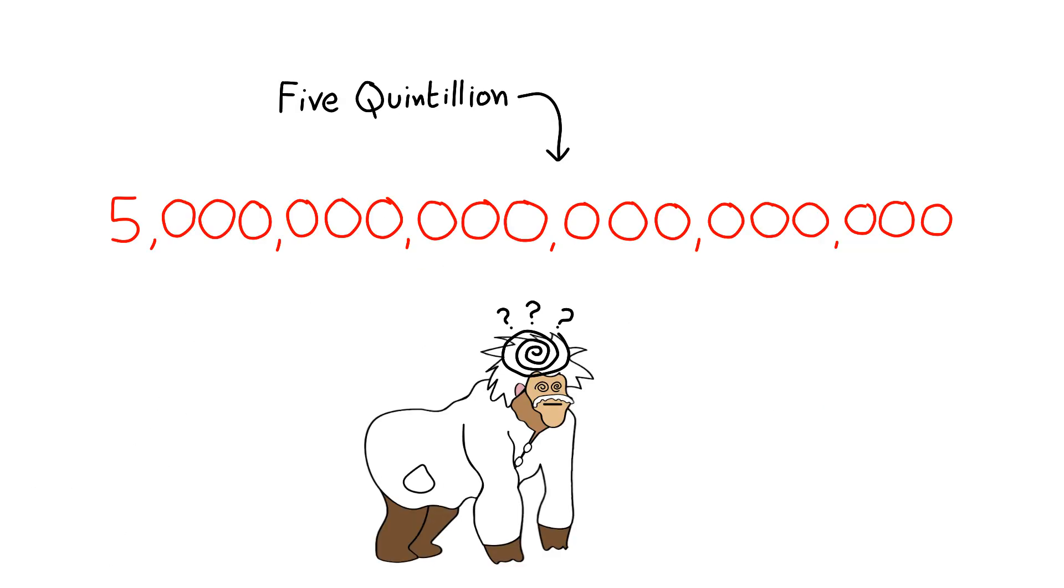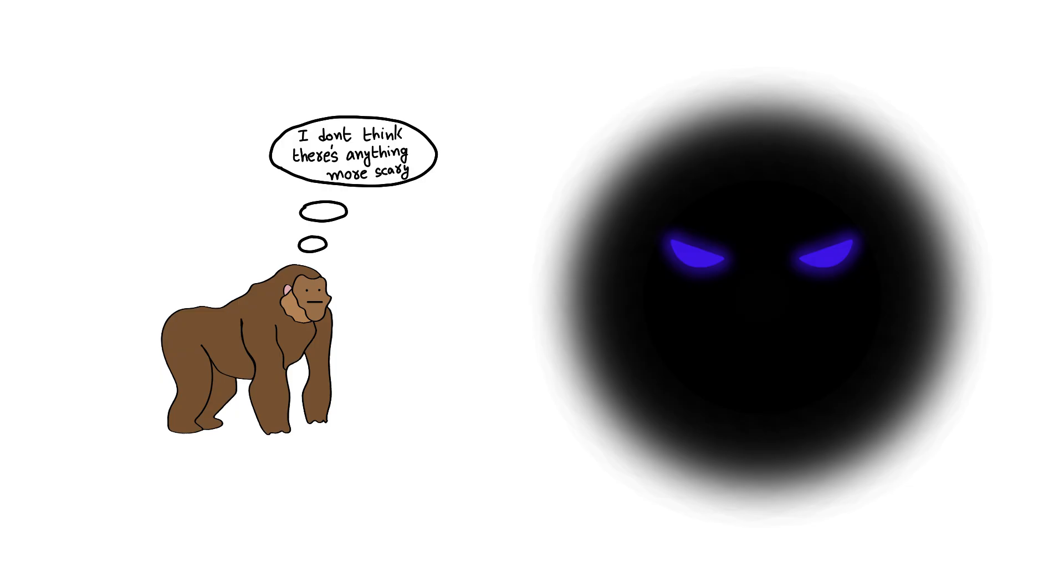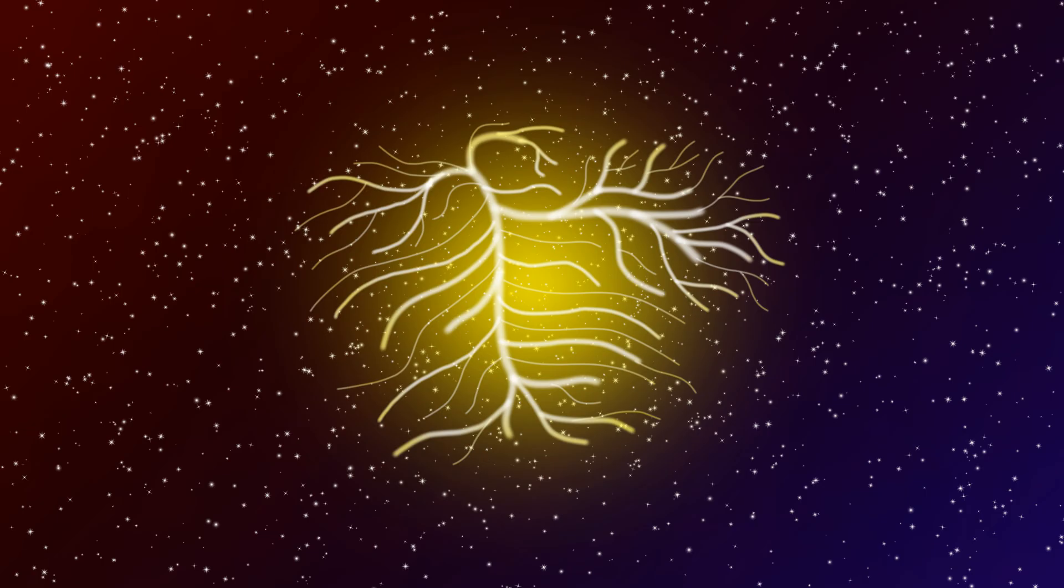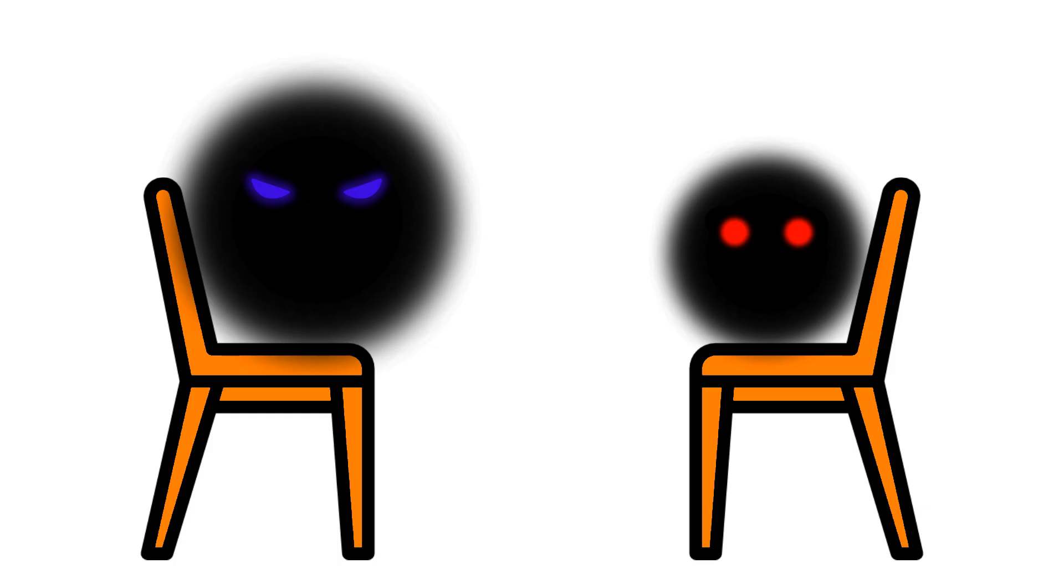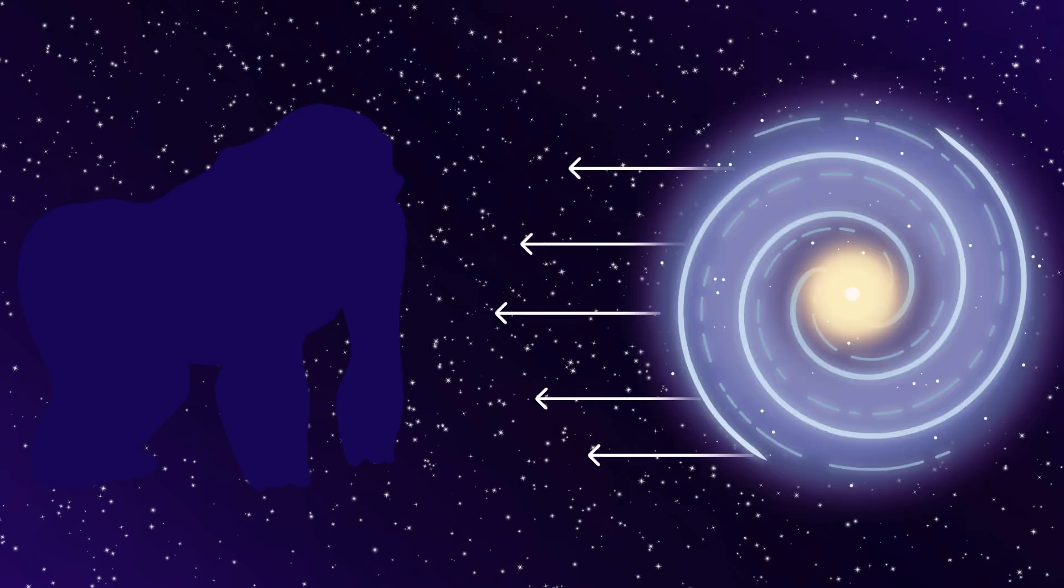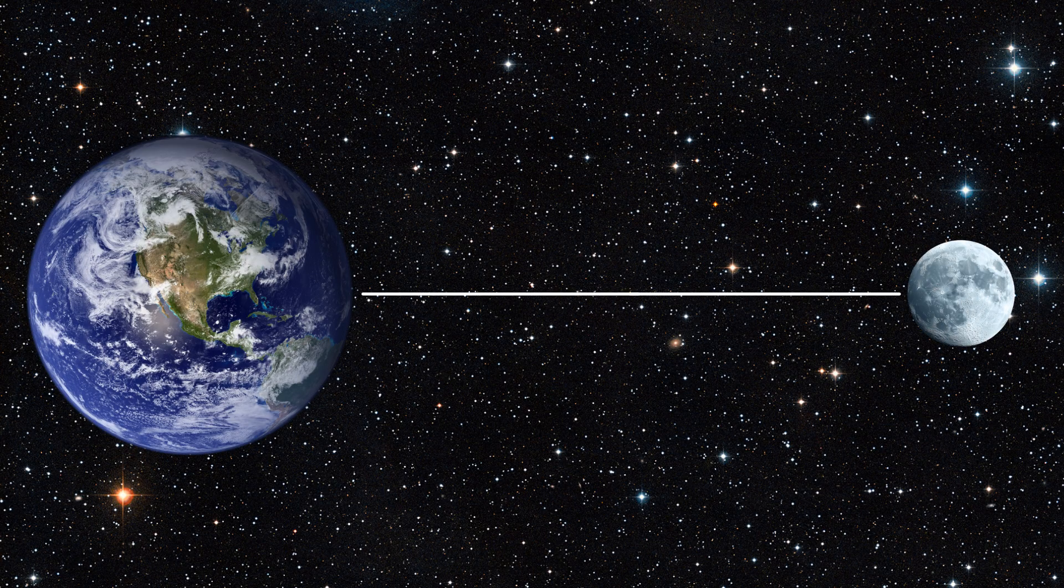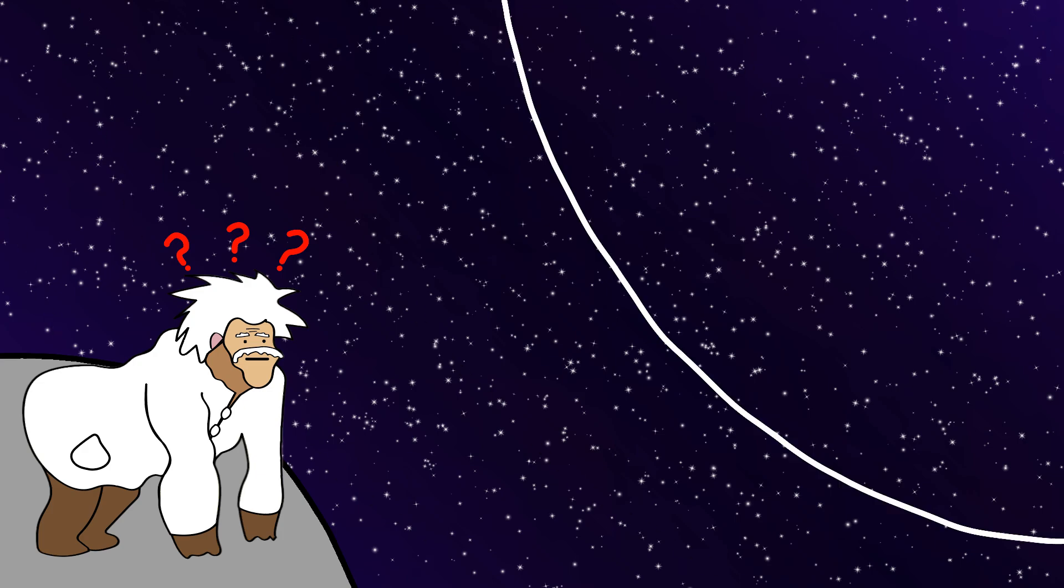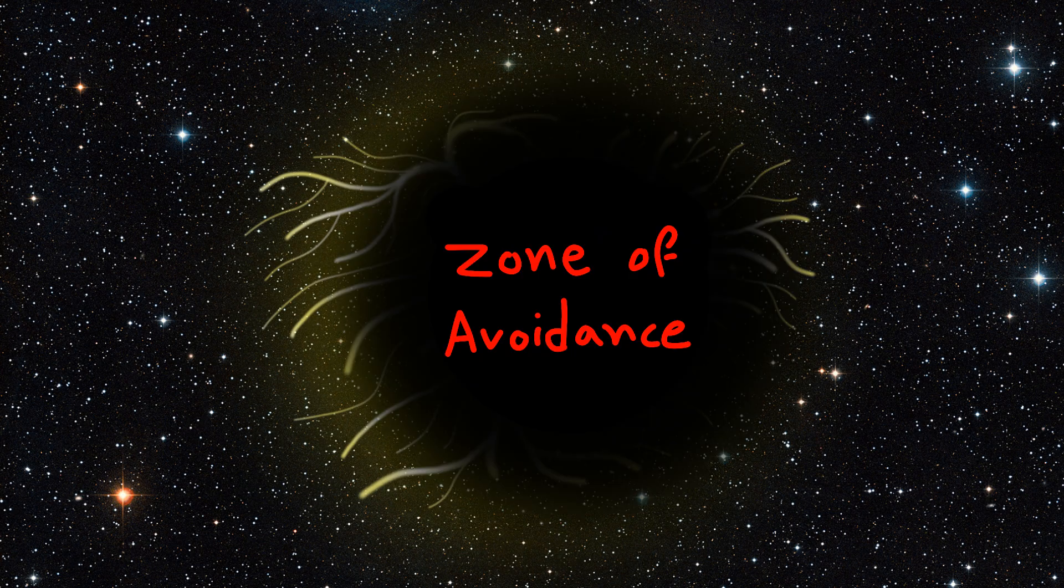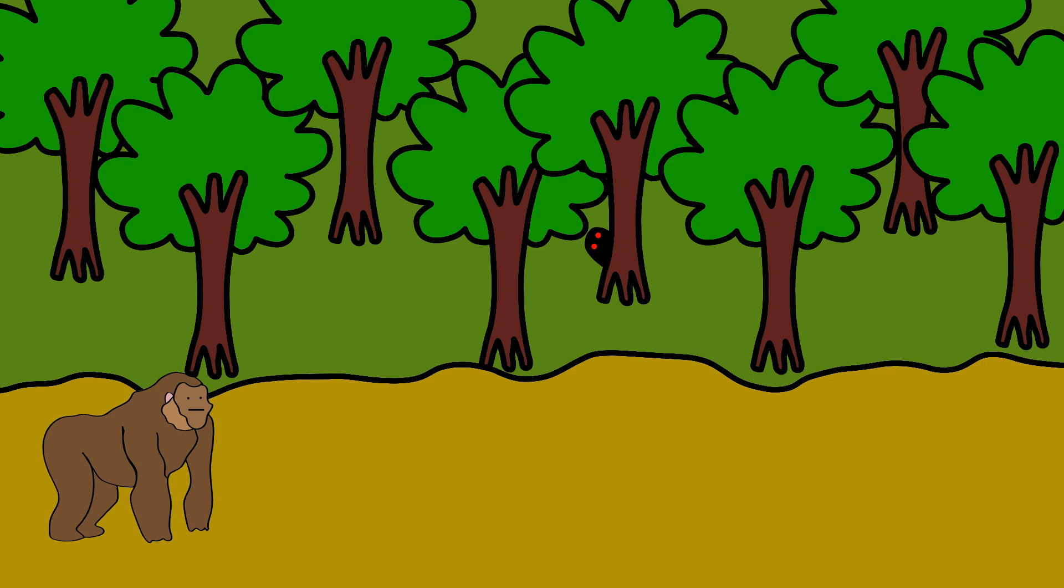Just when monkey thought the universe couldn't get scarier, monkey discovers the Great Attractor. This cosmic beast makes previous voids look like friendly neighbors, because at least voids just sit there being empty. The Great Attractor is actively hunting. Imagine an invisible gorilla so massive it's dragging the entire Milky Way galaxy, monkey's home, toward it at 600 kilometers per second. That's fast enough to travel from Earth to Moon in 11 minutes, and monkey can't see what's pulling us. The Great Attractor is hiding behind the Zone of Avoidance, a region blocked by our own galaxy's dust and stars. It's like trying to see a monster in the jungle, but the jungle is so thick that the monster is completely invisible, except the monster is so big it's pulling the entire forest toward its mouth.